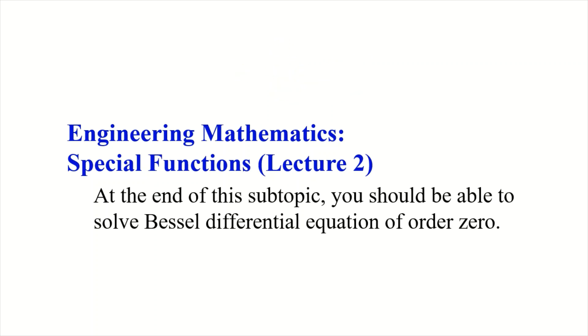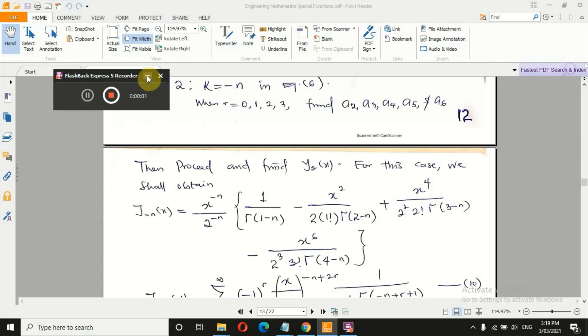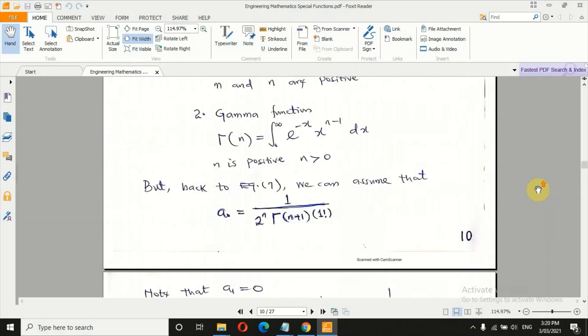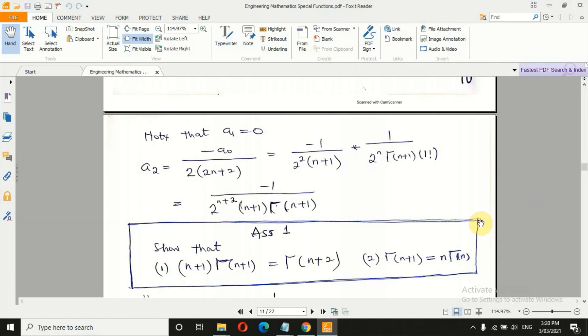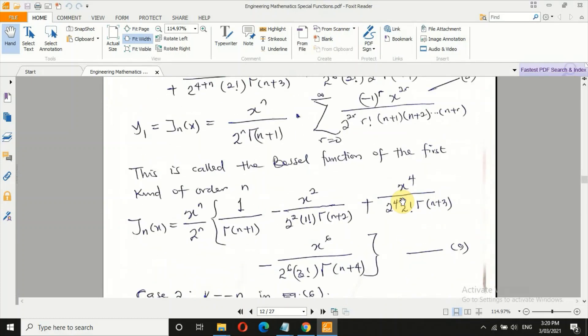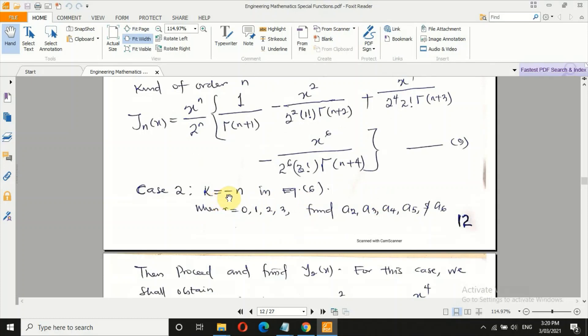Engineering Mathematics, Special Functions. At the end of this subtopic, you should be able to solve Bessel Differential Equation of Order 0. The last part happens to be hypergeometric differential equation. Each of them will give us a special function. I ask you to take a look at assignment number 1 on page 11, the gamma function. Another assignment: take a look at the second case when k equals minus n, talking about the solution.